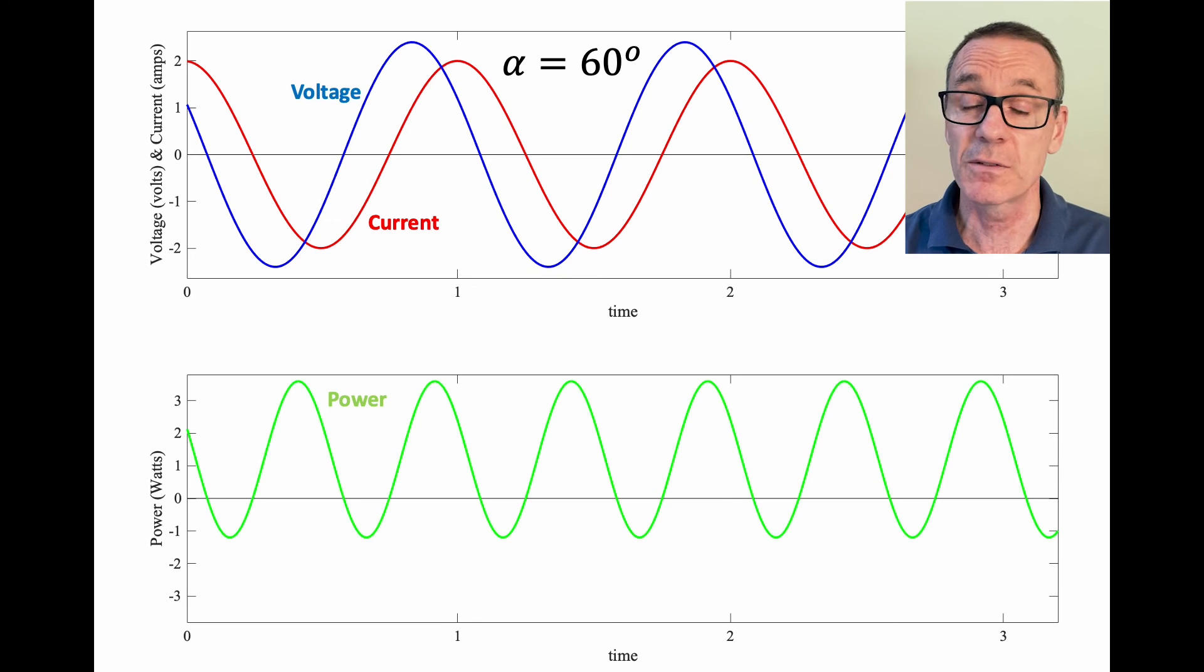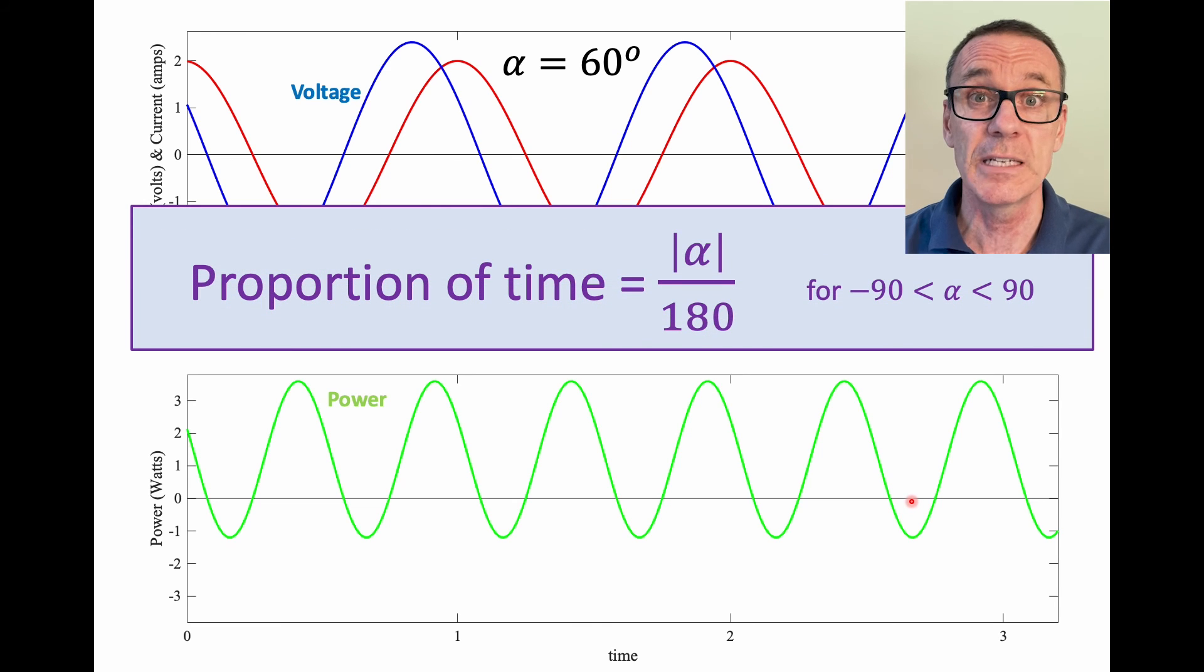If we return to our alpha equals 60, just for one final observation, and that is, you might be interested in the proportion of time that your power is flowing in the, let's say, wrong direction, in the direction opposite to what you want it to be. So that can be calculated with a very simple formula, and you can calculate this for yourself in a fairly straightforward manner. The proportion of time that it's negative is the modulus of alpha divided by 180. And we can see that here in this example, 60 degrees is alpha. So the proportion of time is one third. And you can clearly see that here, that a third of the time, it's negative, and then two thirds positive, one third negative. So that's a very simple relationship, which helps you relate the phase offset to the proportion of time.